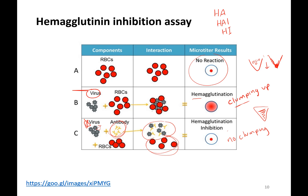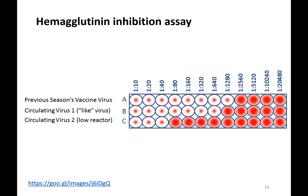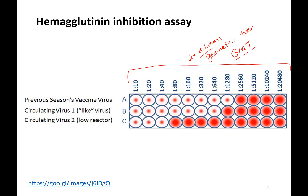This is going to be done in serial dilution. The way they do a serial dilution for hemagglutination is two-fold dilutions: 1 to 10, 1 to 20, 40, 80 — everything's two-fold. This is called a geometric titer, which is just what it's called when you do it in two-fold dilution. You're going to see these numbers expressed as geometric mean titer, which means two-fold dilutions — the mean is the average, and the titer is the value.